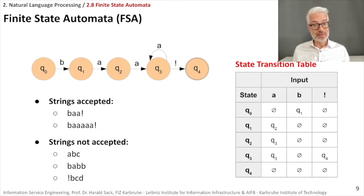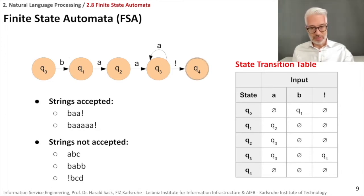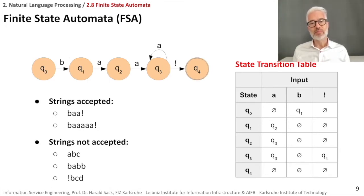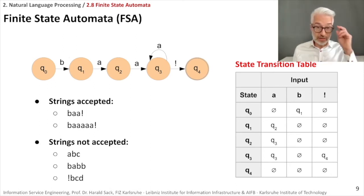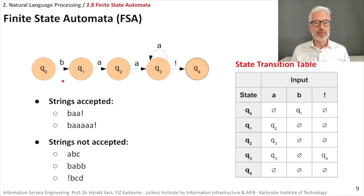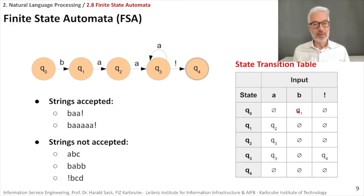Of course you can write the state transitions as a graph, labeling each edge with the letter responsible for a specific transition. Alternatively, you can write a state transition table. In the table, column one contains the different states and row one contains the input symbols: 'a', 'b', and '!'. We have states q sub 0, 1, 2, 3, and 4. For example, if we are in state q sub 0 and encounter input 'b', we end up in q sub 1.